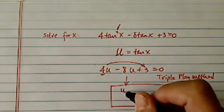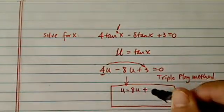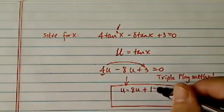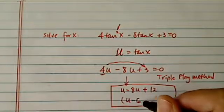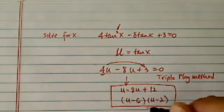Basically what you do is you factor a fake one, where 4 times 3 becomes 12. You factor the fake one first, and here you have u minus 6, u minus 2.